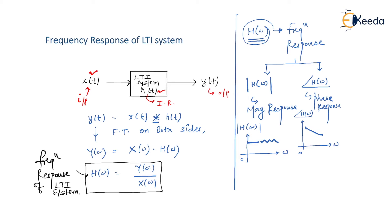To summarize: for an LTI system with input x(t), output y(t), and impulse response h(t), we have y(t) = x(t) * h(t). Taking the Fourier transform: convolution becomes product, so H(ω) = Y(ω)/X(ω) is the frequency response, from which we obtain two responses — a magnitude response and a phase response. We will study them in detail now.